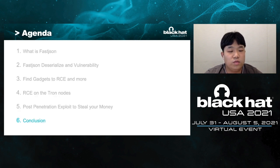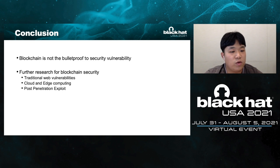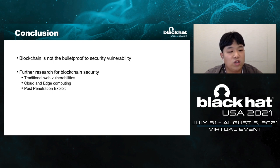Finally, we make a conclusion. Although distributed and decentralized structure improves the credibility and fault tolerance of the system, blockchain is notably not bulletproof against security vulnerabilities. We hope our work can notify blockchain developers and users to be more careful about security. Our future research on blockchain security will include traditional web security, cloud and edge computing, and post-penetration exploitation. Here is a vulnerability timeline. Special thanks to Song Kai, Zhou Junyu, Liu Huimin, and Yuyao. Thanks.